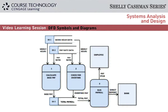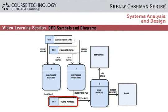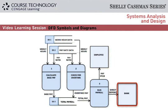The three data stores are work hours, pay rates, and total payroll. The two entities are an employee who receives a pay stub, and a bank where direct deposits are made. This example shows how to use and connect DFD symbols properly.